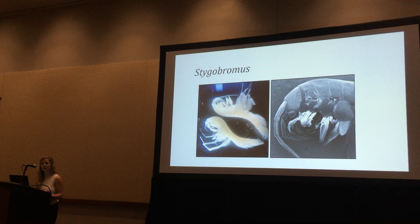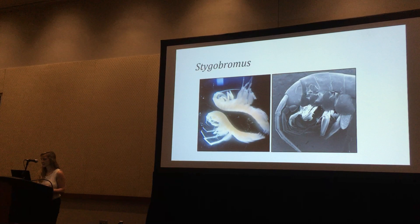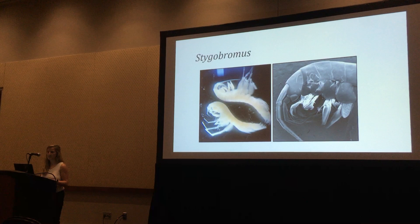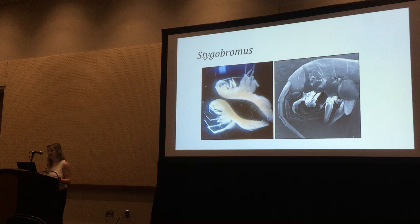One such genus of stigobiotes is Stigobromus. There are over 200 described species, almost all of them described by one researcher, Dr. Chris Swinger, and they're almost all located along the east coast of the United States. There are very few described species in the west in general.